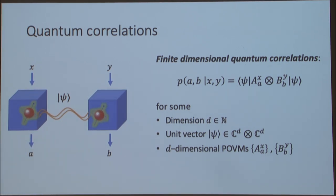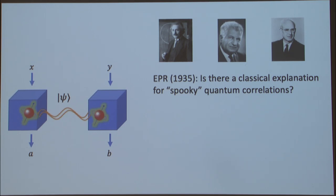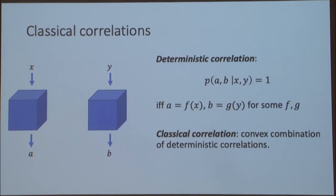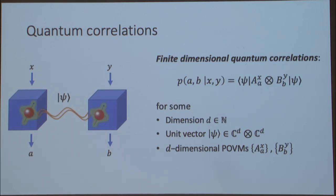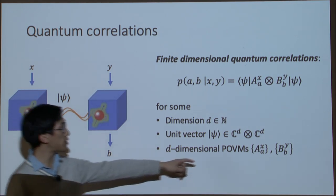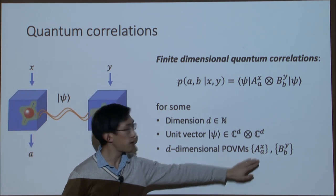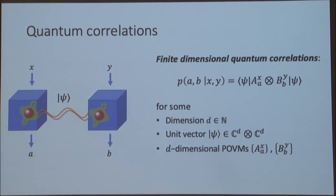To clarify: if you fix an input x, the operators A_{x,a} for all a sum to identity, and they're positive operators — equivalent to saying each question x yields a valid probability distribution over answers. You don't need to remember the exact formula, but that's what quantum mechanics tells us about these two devices.